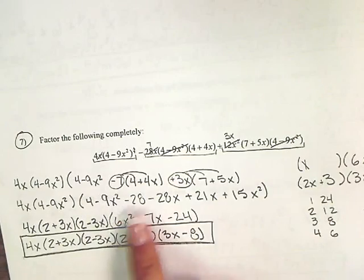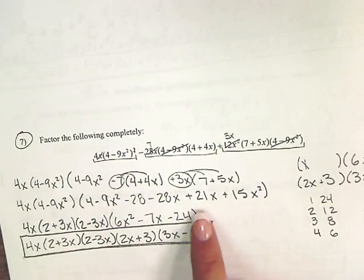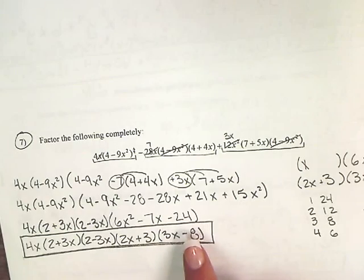And then combining all like terms, we got 6x squared minus 7x minus 24.